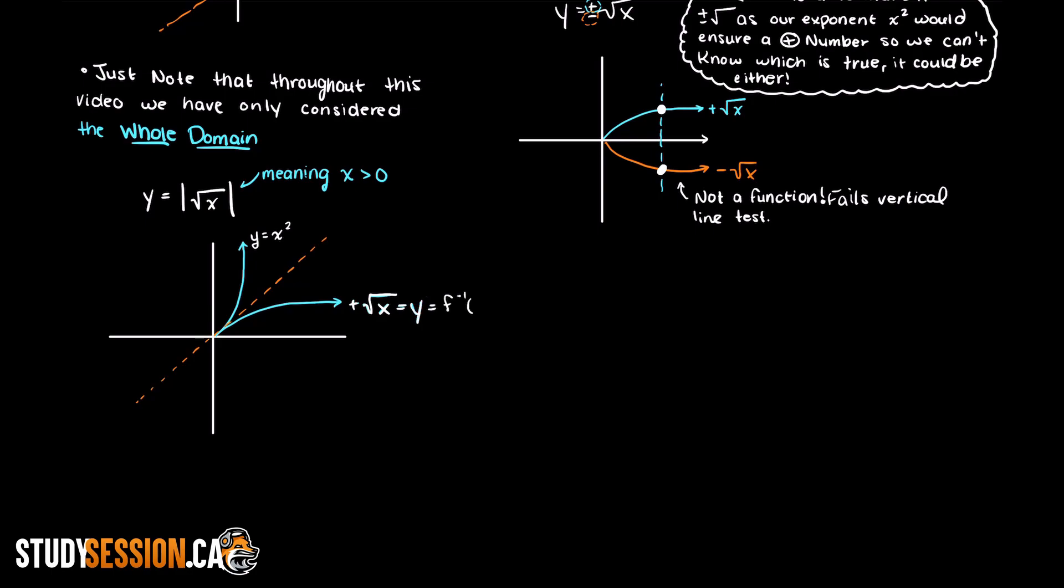Since our domain now does not have any negative numbers, well now we can actually invert this function, as our graph looks like this. And this clearly is a function, and the horizontal line test is passed.